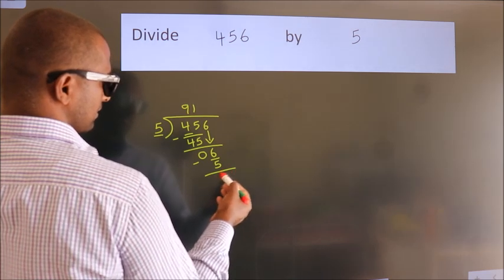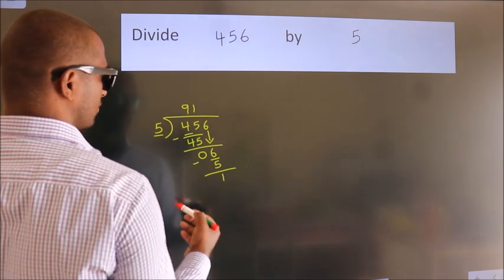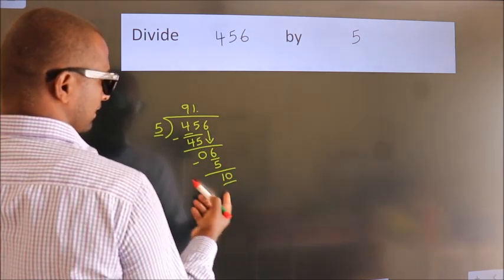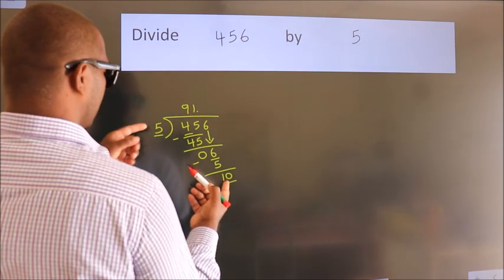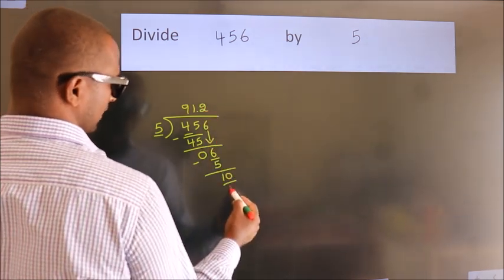After this, no more numbers to bring it down. So what we do is, we put a dot and take 0. So, 10. When do we get 10? In the 5 table. 5 twos, 10.